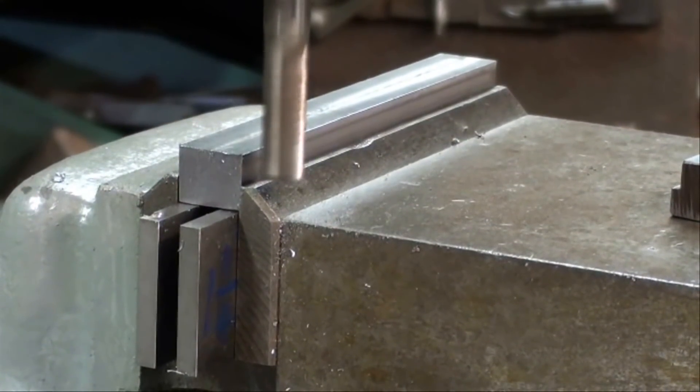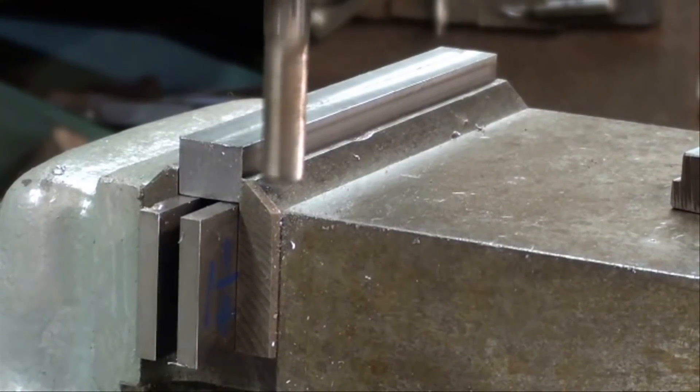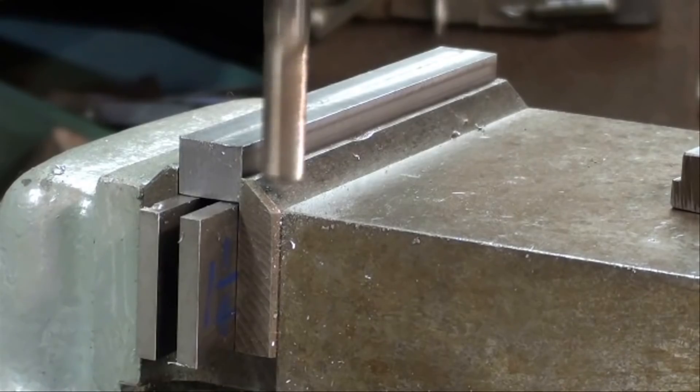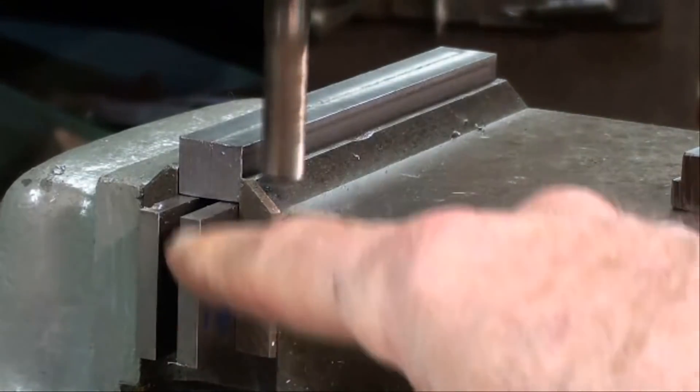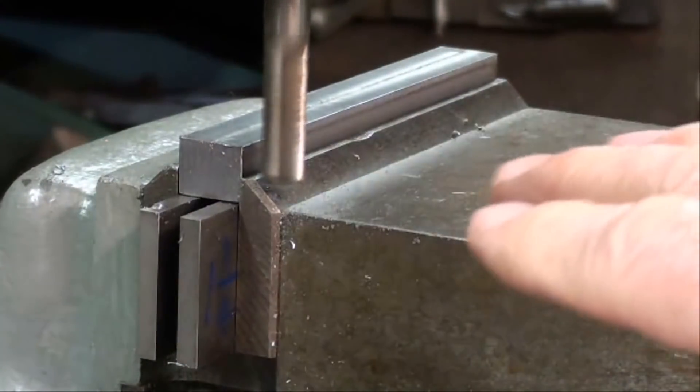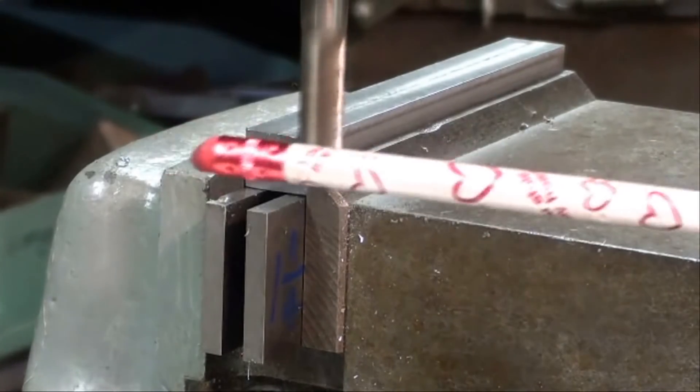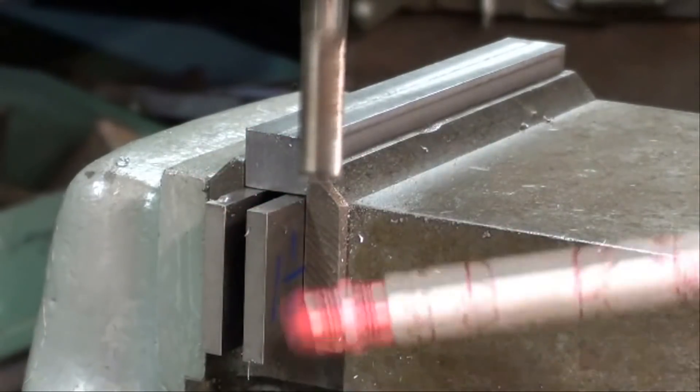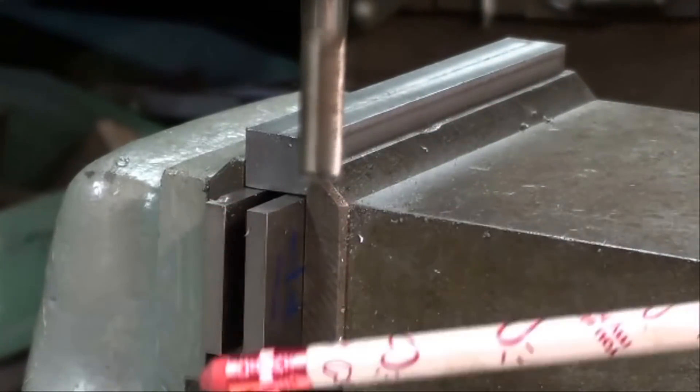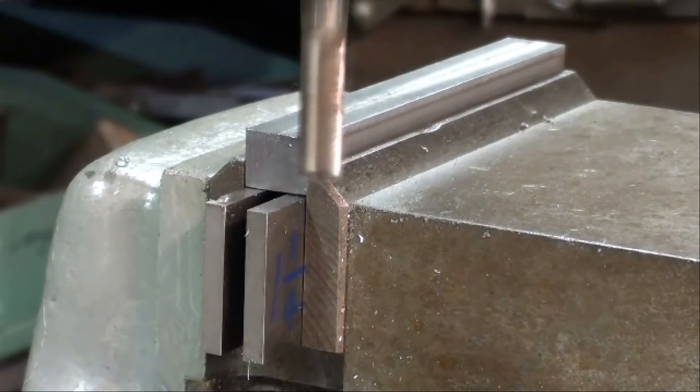I've already zeroed out the collar on the knee, and up I go 250 thousandths. That's two and a half revolutions of the knee crank. So I'm at the right height now. It's very necessary to use parallels of the right height so you avoid hitting the vise. Now I already came in until I touched the work.